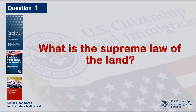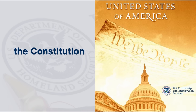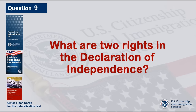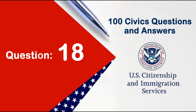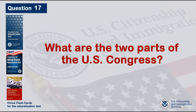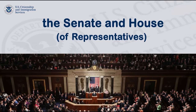What is the supreme law of the land? The Constitution. What are two rights in the Declaration of Independence? What are the two parts of the U.S. Congress? The Senate and House.